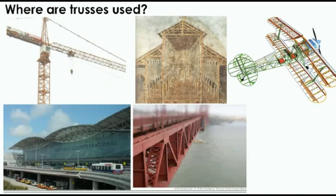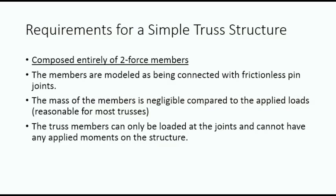Note how all of these structures are made out of triangles. The requirements for simple truss analysis are that the structure is composed entirely of two-force members. This assumption carries several other assumptions necessary for truss analysis. In order to model a structure as a truss, the members must be modeled as connected with frictionless pins at the joints. The mass of the members must also be negligible compared to the applied load. This is reasonable for most trusses such as bridges, aircraft, or even cranes. The truss members can only be loaded at the joints and cannot have any applied moments on the structure. These are all requirements for a two-force member.